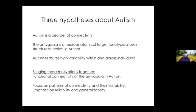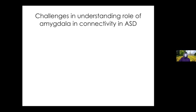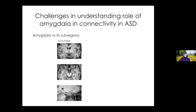In this project, we wanted to bring these three motivations together by investigating the functional connectivity of the amygdala in autism, focusing on the patterns of connectivity and their variability, with a strong emphasis on reliability and generalizability. The amygdala is not a homogenous region — it consists of several neuronal subpopulations or nuclei, but those are relatively hard to see in standard neuroimaging at the current standard imaging resolution of one by one by one millimeter.